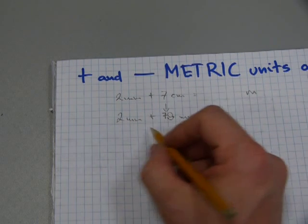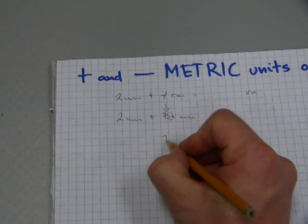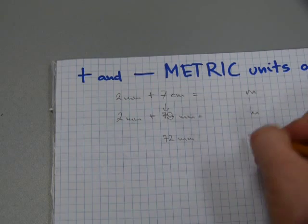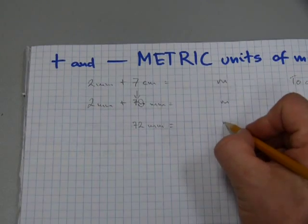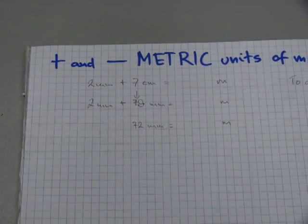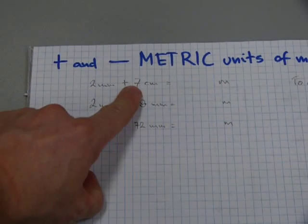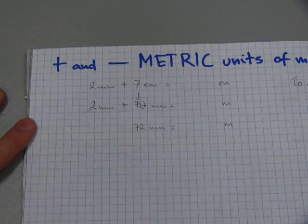So, we have 2 millimeters plus 70 millimeters. And that's 72 millimeters. But we still haven't worked out how many meters these are. We still don't have a final answer. But at least we added the 2 millimeters and the 7 centimeters meaningfully.